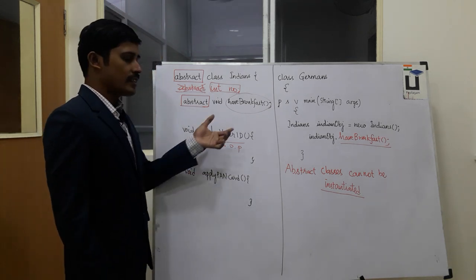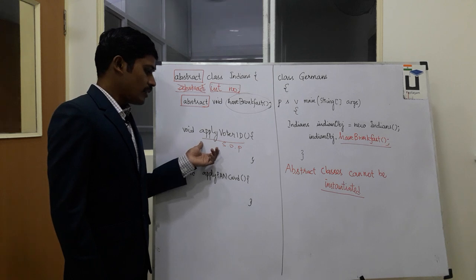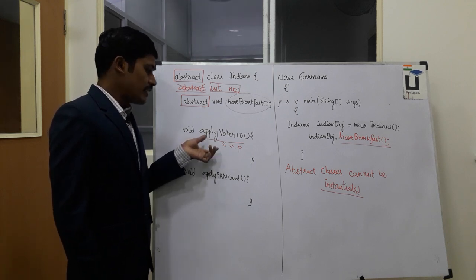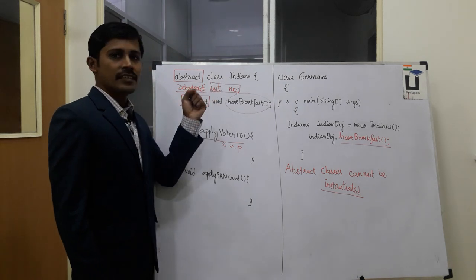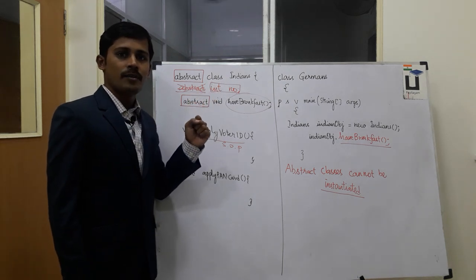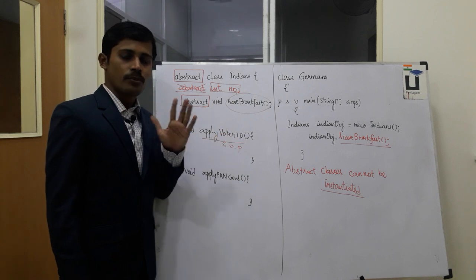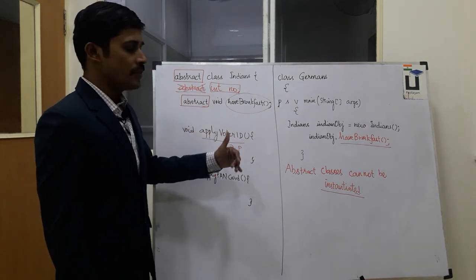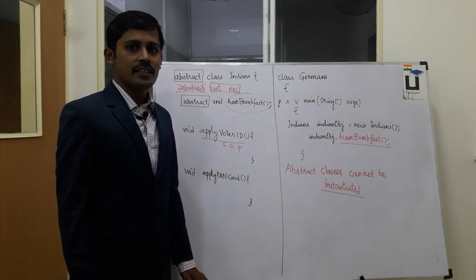If you use the static method, you can use the class name. These two objects are the instance methods. If you think about it in the abstract class, the next one — let's look at the previous videos. I appreciate it.